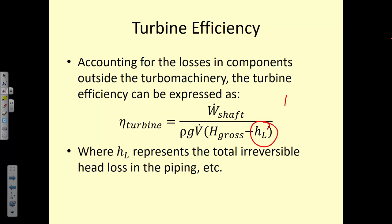H_net equals H_gross minus the head loss. Sometimes the head loss is given directly, sometimes H_net is given — it depends on what the problem provides. If you've had fluids before, this should be very familiar. The main difference is that here we use V-dot for volumetric flow rate where fluids courses use Q.